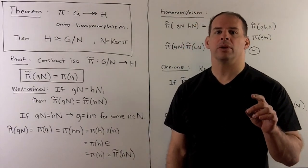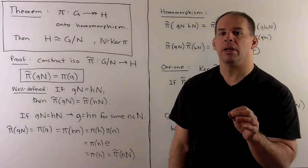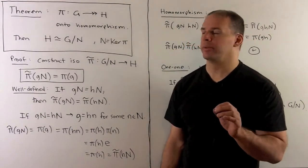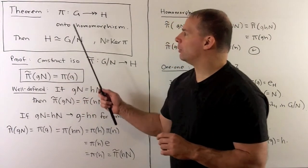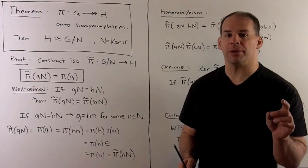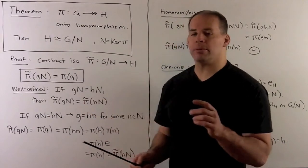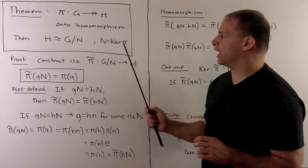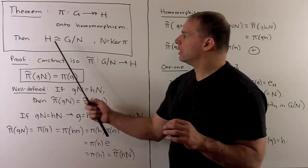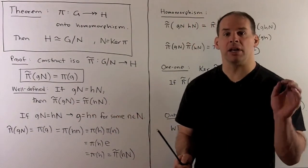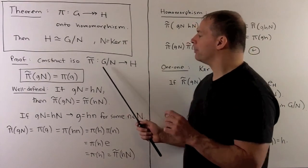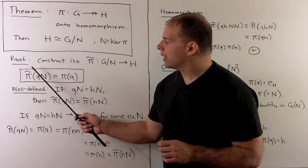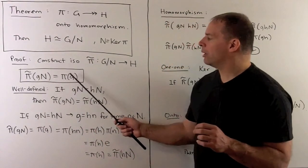Before more examples, we prove the following theorem — it's a bit on the abstract-nonsense side, but once we have it we'll be able to generate many examples easily. Theorem: let pi from G to H be an onto homomorphism. Then H is isomorphic to G mod N, where N is the kernel of pi. To show these are isomorphic, we construct an isomorphism pi-tilde from the quotient group G/N to H, defined by pi-tilde of the coset gN equals pi of g.